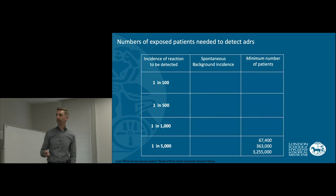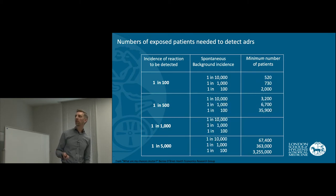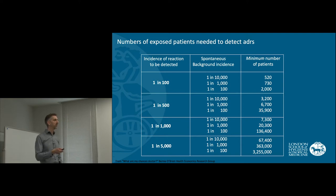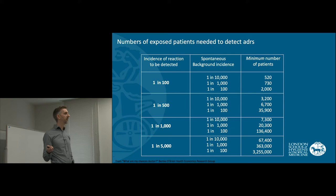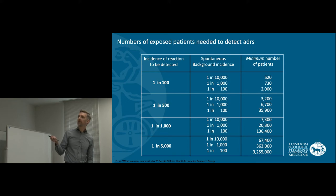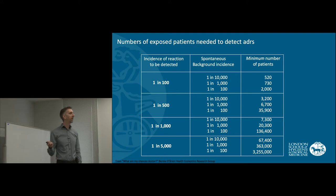Just to illustrate this, I've got this slide here showing you, based on the number of people who have been exposed to a treatment in trials, what sort of adverse reactions could we have detected. If we think about common adverse reactions — something that happens to 1 in 100 patients, we'd call that common at 1% — and if the spontaneous background incidence is 1 in 10,000, we would need to have had 520 patients exposed in randomised trials to detect that reaction. We have a fair chance of being able to detect that in our randomised trials.